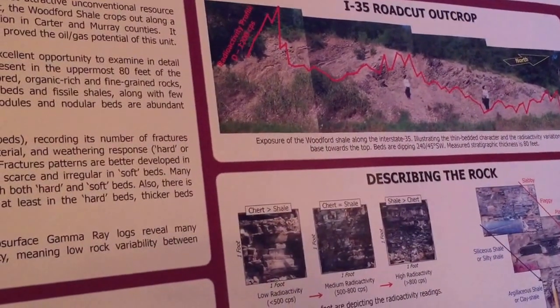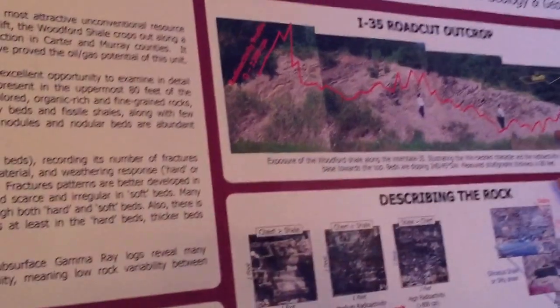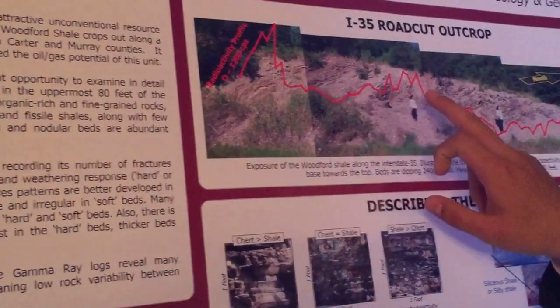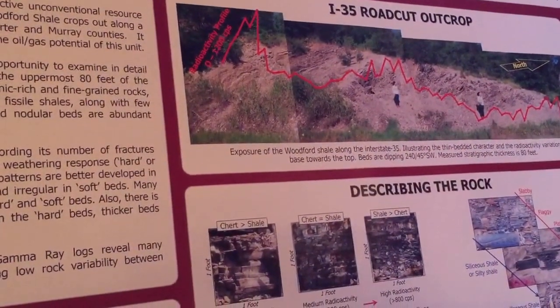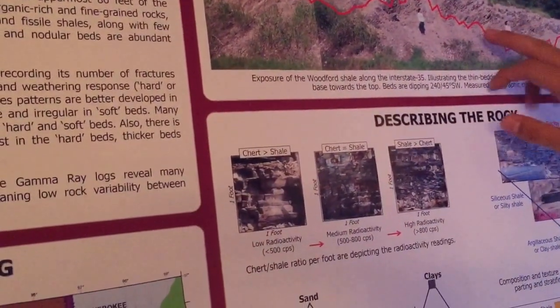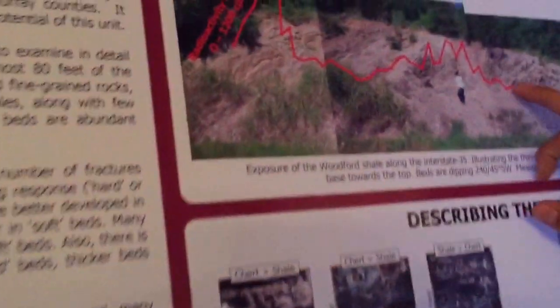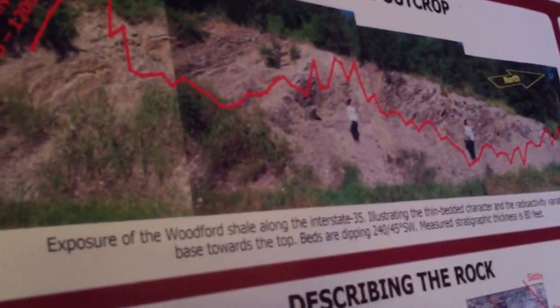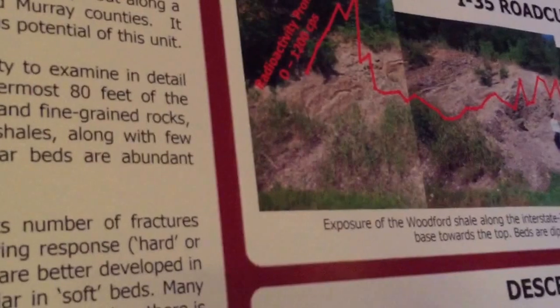On every single foot we have natural radioactivity data and also we have at least two samples per foot. Based on the natural radioactivity profile and the outcrop, we figured out that the natural radioactivity depicts the chert-shale ratio.